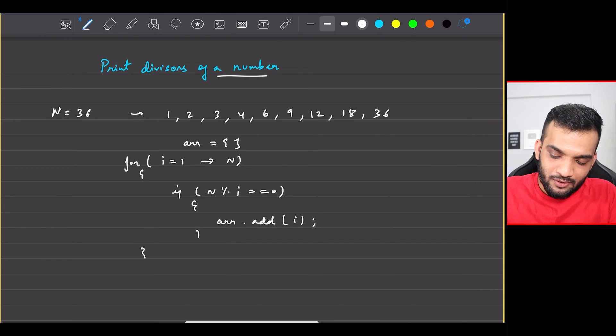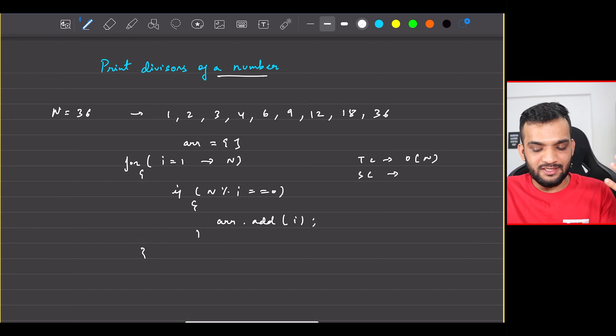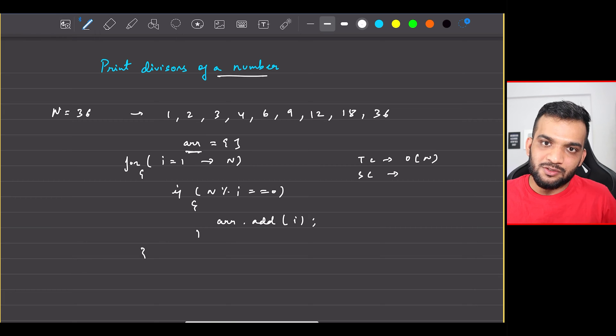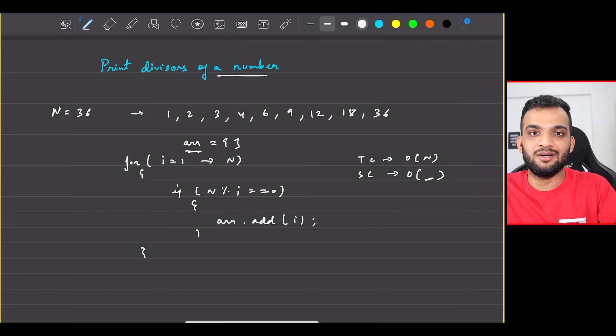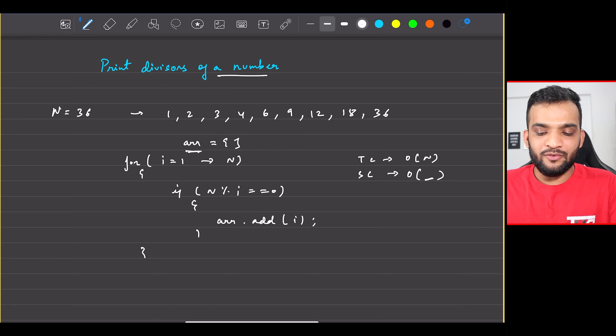But what will be the time complexity? The time complexity of this particular approach will be O(N). And what will be the space complexity? Now I'm not using any space. The space that is being used is for returning the answer. So typically I'm not using any space for solving it. Whatever space I'm using, it is for storing the divisors and returning it. The space complexity will be depending on the integer N, so you cannot pinpoint. You can tell the interviewer that if N is one, I'll be requiring O(1) space. If N is two, I'll be requiring O(2) space. So depending on the number, the space complexity will vary, and that is only required for storing the answer.